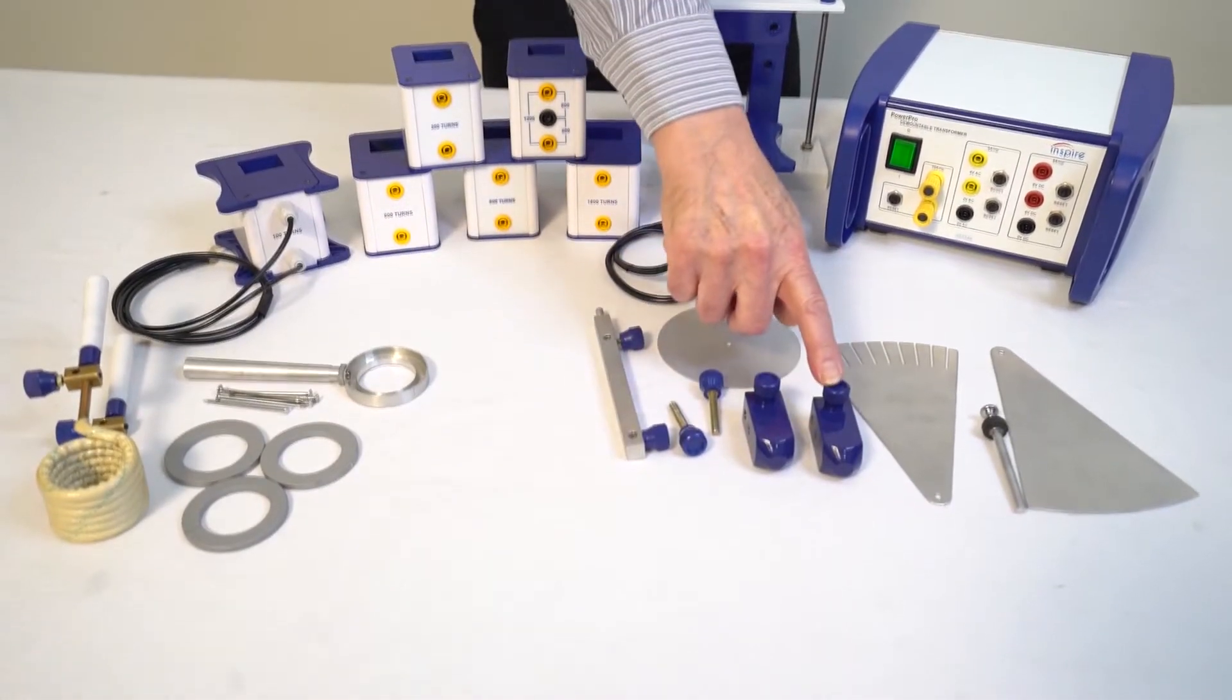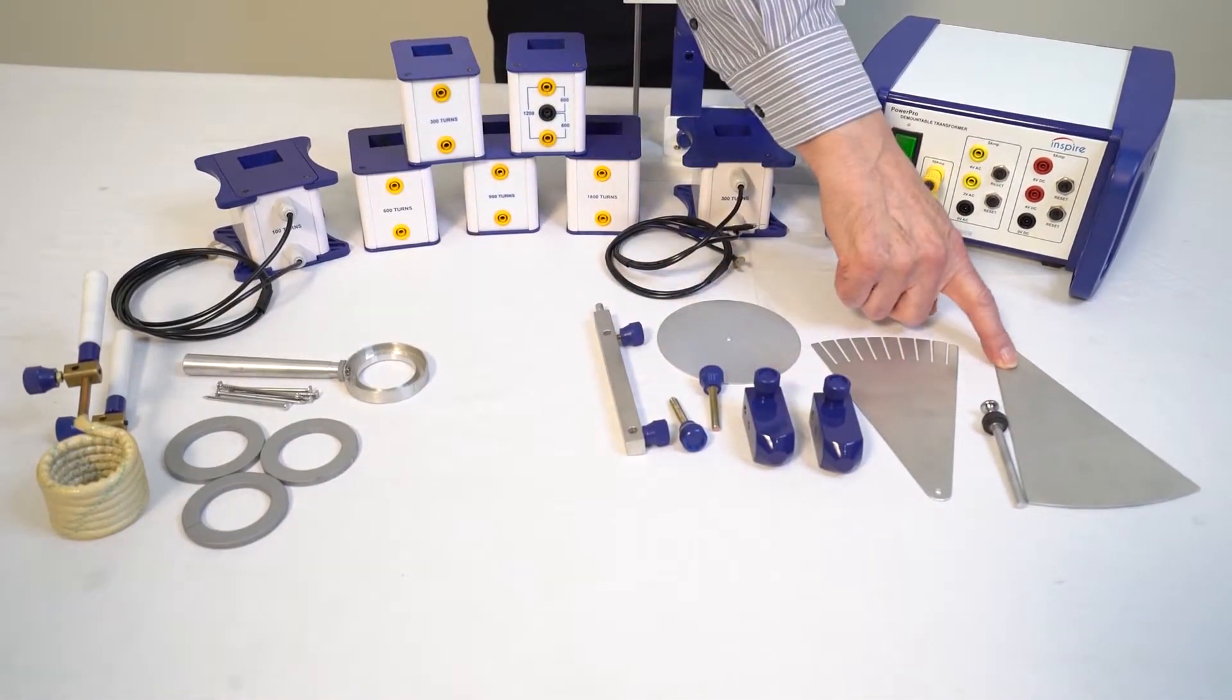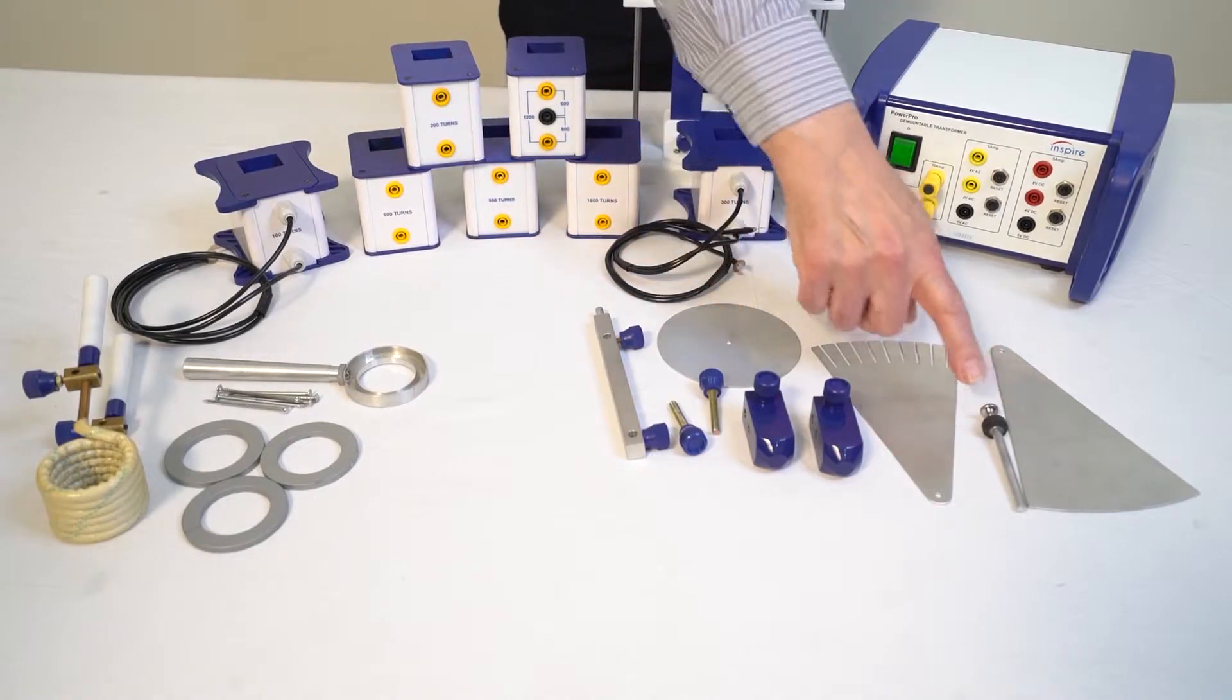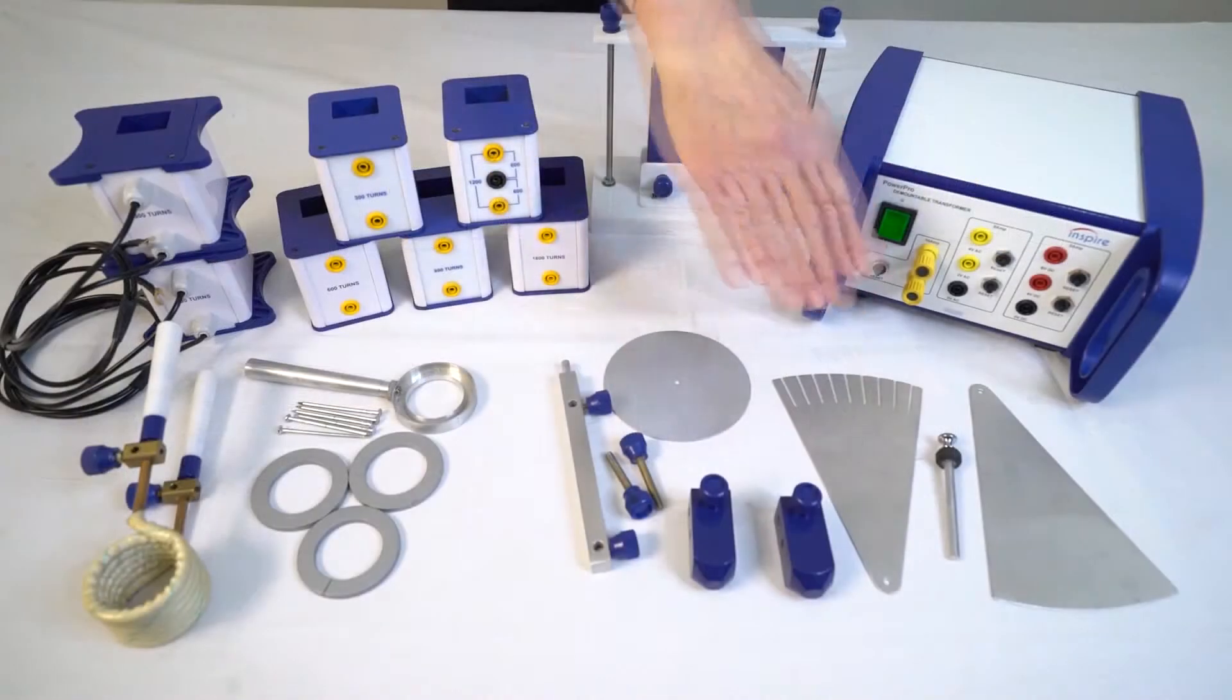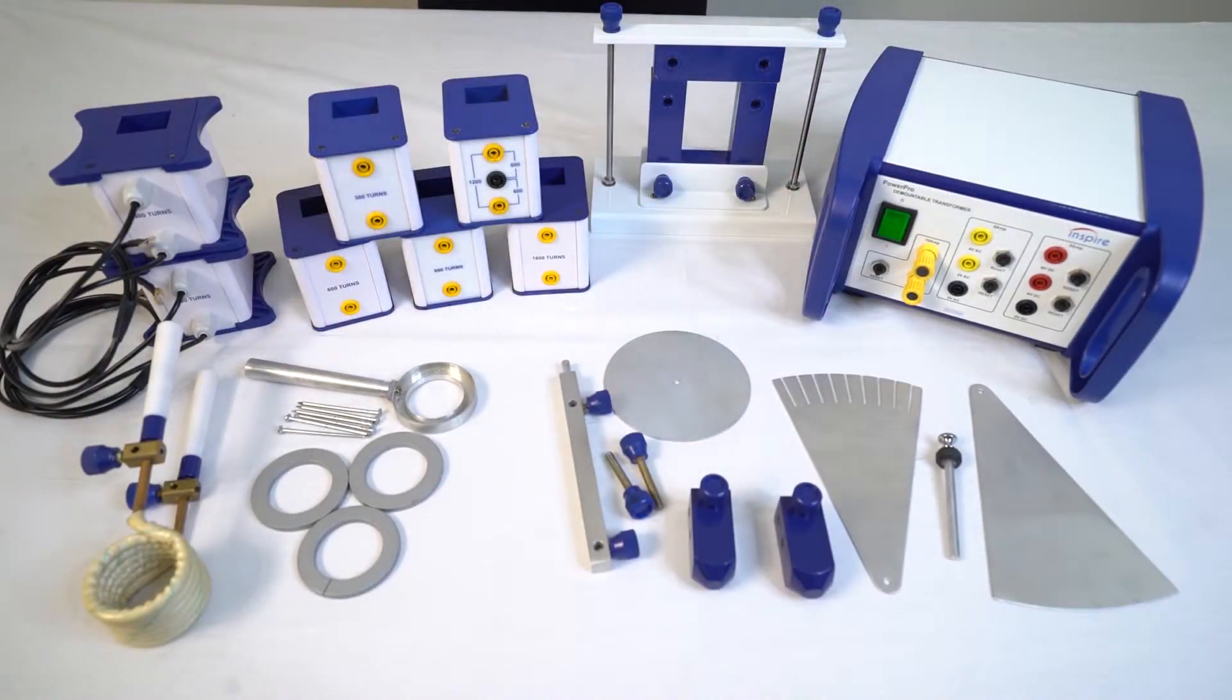The motor accessory set includes pole pieces, aluminium quadrants and discs, plus supports and pivots. Both accessory kits are available separately.